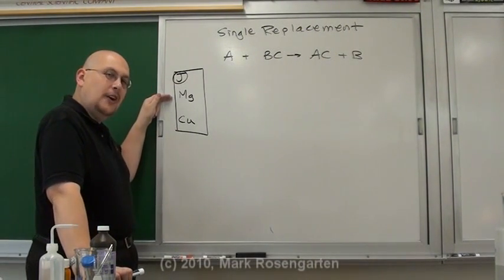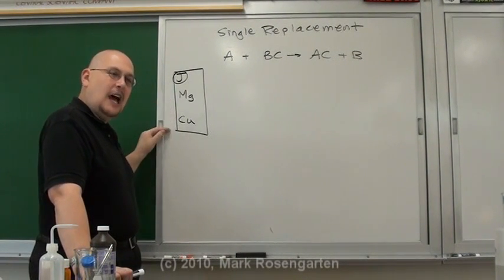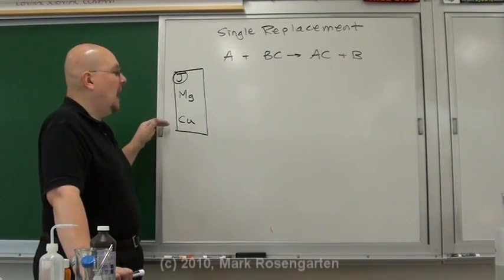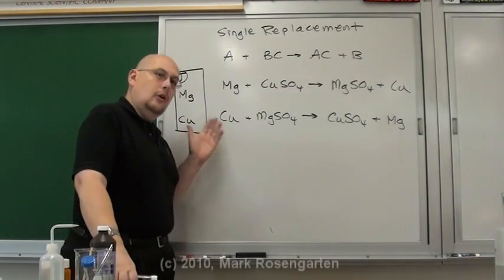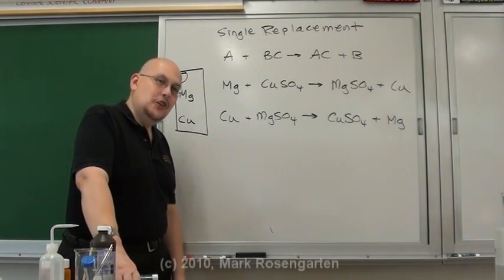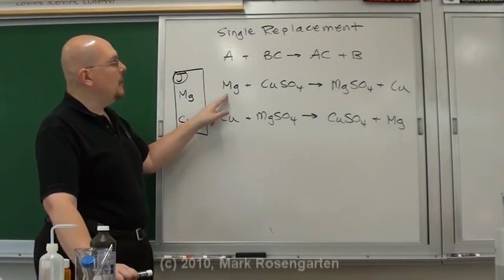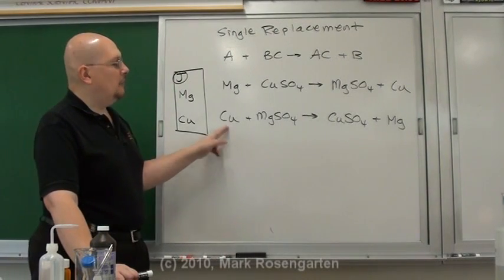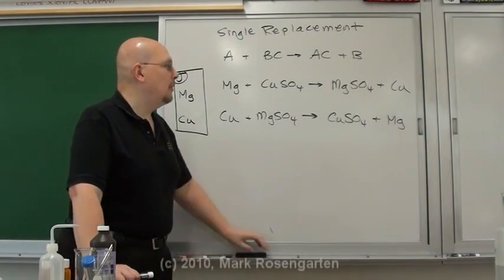So any active metal can replace a less active metal that's sitting there in a compound. According to reference table J, magnesium is a much more active metal than copper is. So magnesium should be able to replace copper in a compound. But copper should not be able to replace magnesium in a compound. Only one of these two reactions should take place. According to reference table J, it's magnesium that should be able to replace copper. Copper doesn't have enough oomph to take magnesium's place.